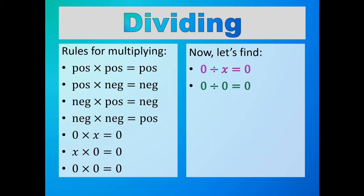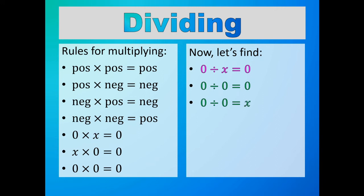Zero divided by zero — here is the product of zero, here is one of the numbers being multiplied as zero, and here is the leftover number being multiplied, x. We could also look at the fifth equation: here is the product of zero, here is one of the numbers being multiplied as zero, and here is the leftover number being multiplied of x. So based on those two equations, we would think that zero divided by zero is equal to x — any number but zero. That means zero divided by zero equals a, meaning any number. You can't have an answer being any number, so this means that it's undefined — there is no answer.